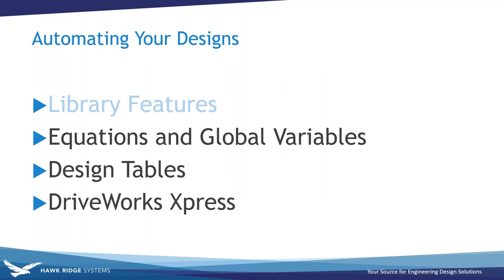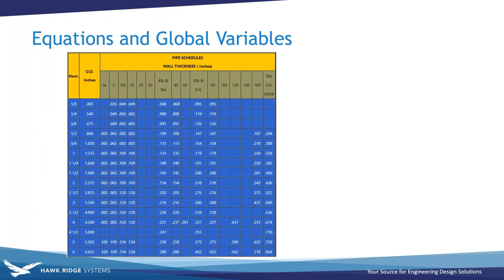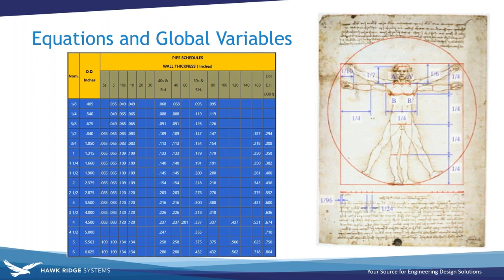That concludes our section on library features with the added bonus of smart components. We're now going to get into equations and global variables. I wanted to show a design entirely derived from equations and global variables. My first instinct was pipe schedules — wall thickness and diameter are all functions of the schedule — but the routing package in SOLIDWORKS Premium already comes with that pre-configured. Then I noticed a picture of Da Vinci's Vitruvian man hanging in my office. It's a drawing based on the correlations of ideal human body proportions, all expressed mathematically, which translates easily into SOLIDWORKS.